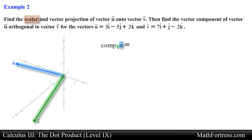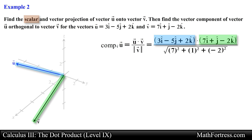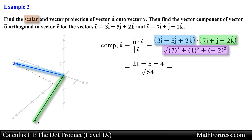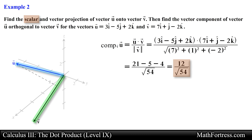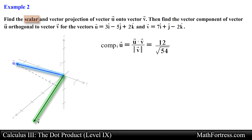We first need to find the scalar projection of vector u onto vector v. So we go ahead and dot vector u and vector v, and divide this value by the magnitude of vector v. Remember, we are finding the scalar projection along vector v and not the other way around. Evaluating the dot product and simplifying, we obtain the following value. Let's keep the radical in the denominator since it will simplify nicely when we find the vector projection.